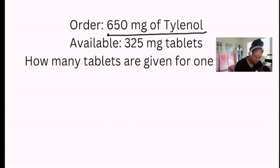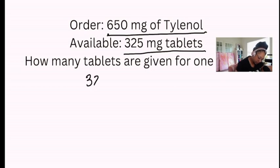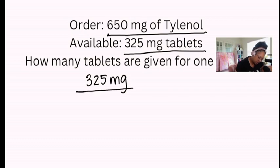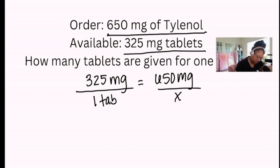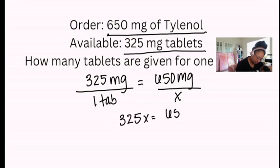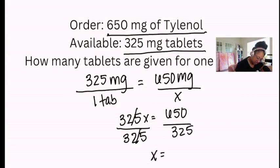First practice problem: 150 milligrams of Tylenol is ordered and 325 milligram tablets are available. How many tablets are needed for one dose? We use what we know first — 325 milligrams over 1 tablet. The units are already the same, so no conversion needed. On the other side, we want 650 milligrams over X tablets. We cross multiply and divide to get X by itself, and we're left with two tablets to give to our patient.